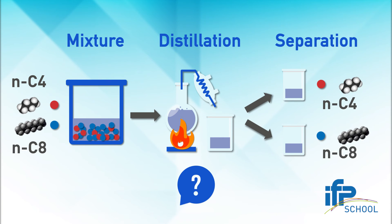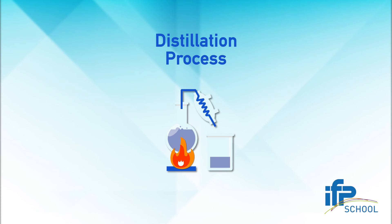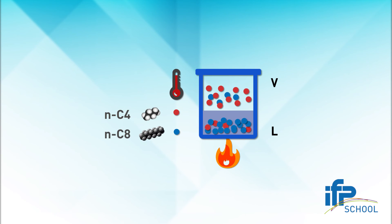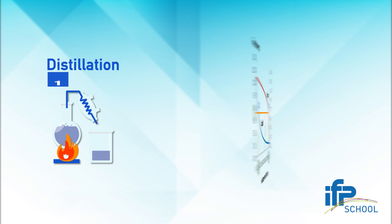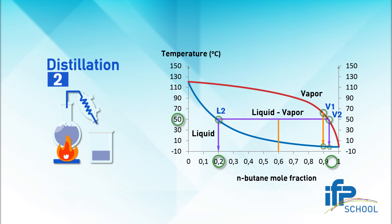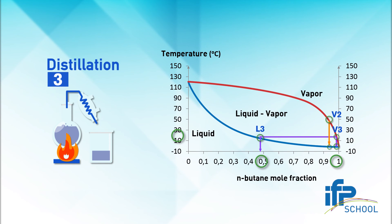You're right, distillation uses this principle. A liquid is partly evaporated. Let's continue with our example. But as you said, the vapor is not pure, right? It contains both butane and octane. You're right again, yet it contains more butane than octane. The vapor is condensed and a second distillation stage is needed, and perhaps a third, in order to improve the separation.